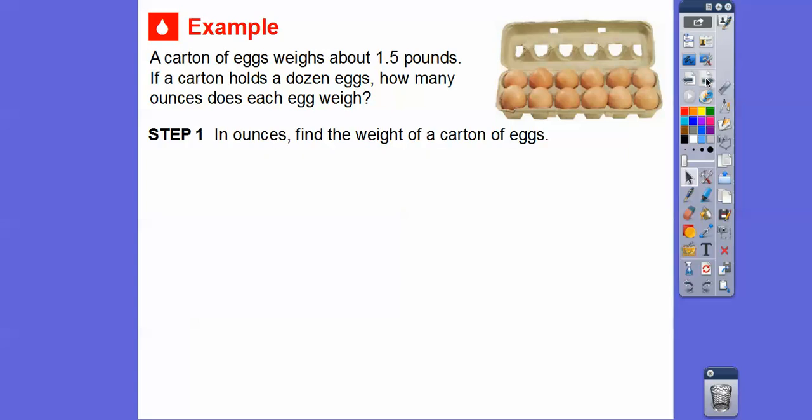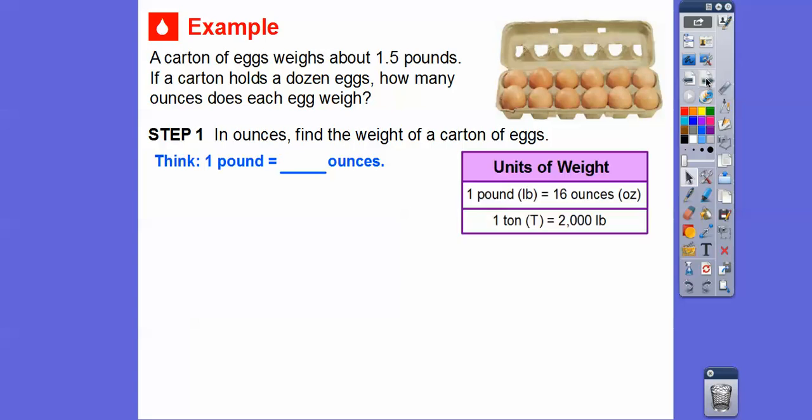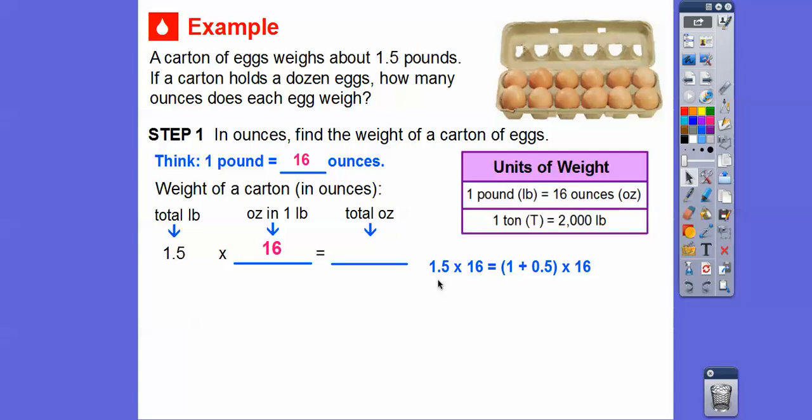We've got to do a couple of conversions here. In ounces, find the weight of the carton of eggs. Remember, one pound equals 16 ounces, so we'll put 16 in right there. Since the whole carton is 1.5 pounds, we're going to multiply 1.5 times 16. If you have trouble with 1.5 times 16, use that distributive property. 1.5 is the same as 1 plus 0.5, so I can multiply 1 times 16 and then 0.5 times 16. 1 times 16 is 16, and 0.5 times 16 is just half of 16, which is 8, and 16 plus 8 is 24. So all of these eggs are going to be 24 ounces.